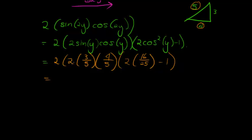What do we get, 2 times 2, as 4 times 3, is 12 times 4, is 48, 48 over 25, because it's 5 times 5, and then on this side, what do we get, 2 times 16 is 32 over 25, minus 1 would be 25 over 25, so 32 minus 25, that would be 7, so here we have 7 over 25.